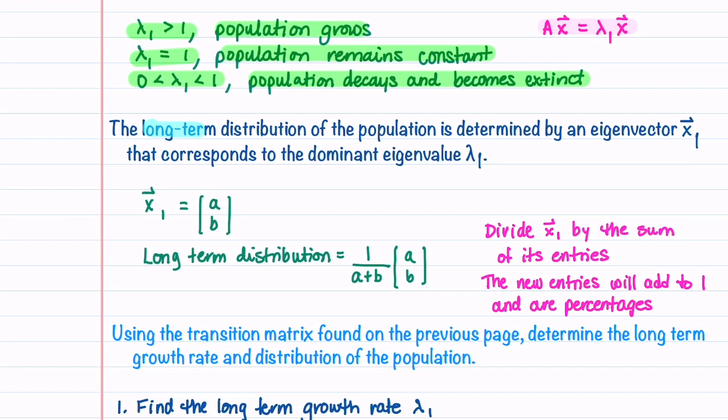The long-term distribution of the population is determined by an eigenvector x_1 that corresponds to our dominant eigenvalue λ_1. If our eigenvector x_1 equals [a, b], for example, the long-term distribution is 1/(a+b) times x_1.